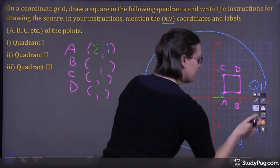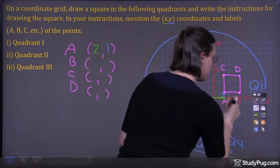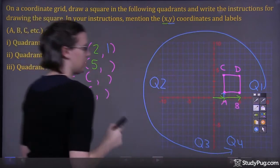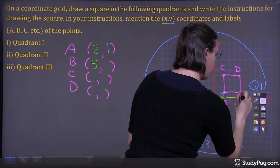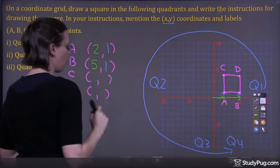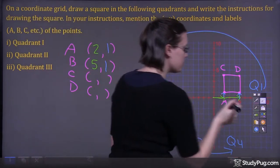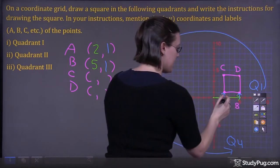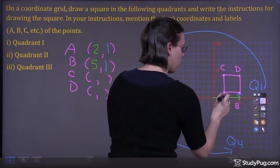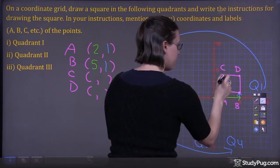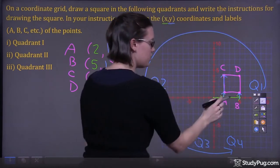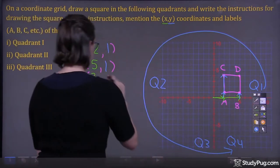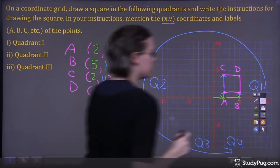Now let's look at point B. We're moving 1, 2, 3, 4, 5 to the right, and we're moving 1 up — so (5, 1). Now let's focus on point C. We're moving 1, 2 to the right, and 1, 2, 3, 4 up — so 2 to the right and 4 up, giving us (2, 4).